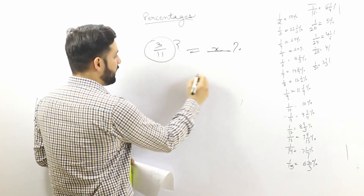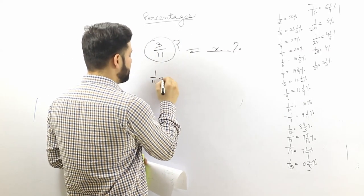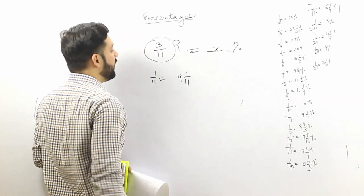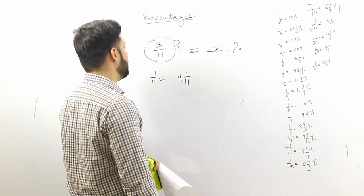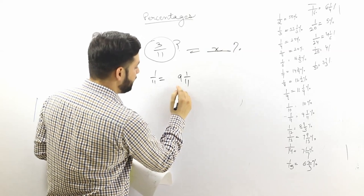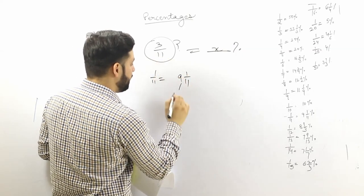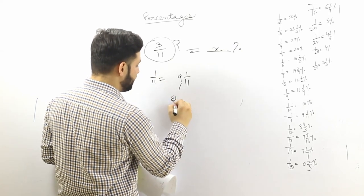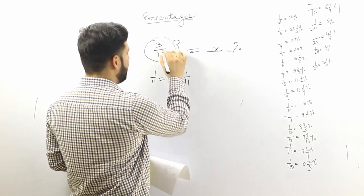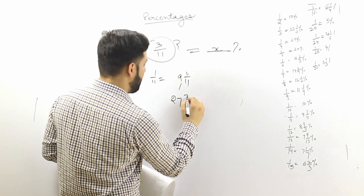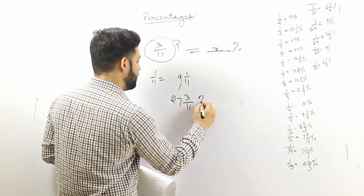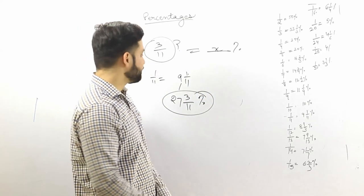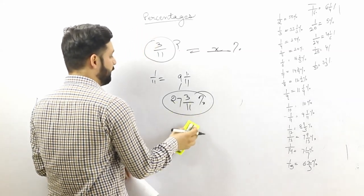The value of 1/11 is 9 and 1/11 percent. For 3/11, we multiply 9 by 3 to get 27, and the numerator 1 by 3 to get 3/11. So the answer is 27 and 3/11 percent.